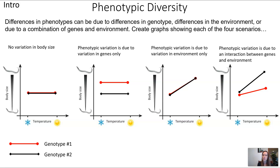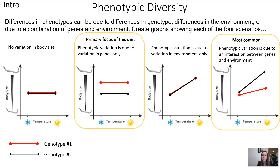In the third scenario, phenotypic variation is due to variation in the environment only. Here the two genotypes are identical, but there is variation in body size because of temperature — for example, in cold temperatures they're smaller. The point is looking at the relationship between the variables, not the specifics. The fourth scenario is phenotypic variation due to an interaction of genes and environment — yes, genotype has an effect, yes the environment has an effect, but they have different effects on different genotypes. This is actually the most common; most traits display this interaction between genes and environment.